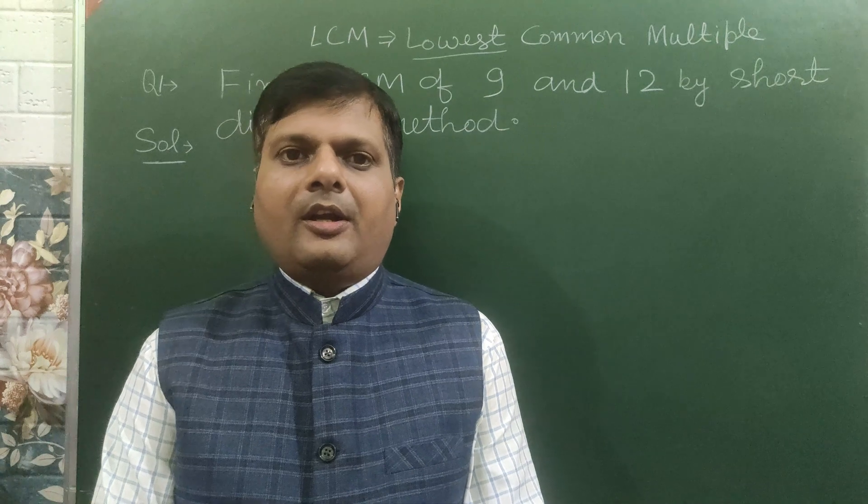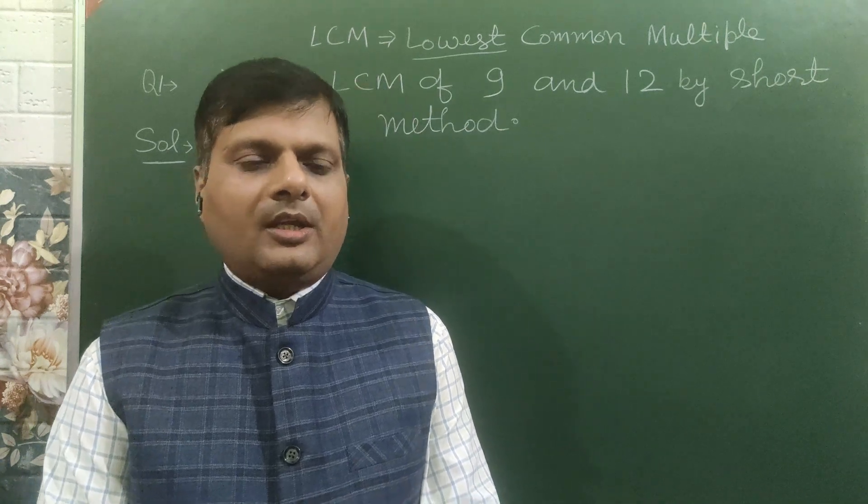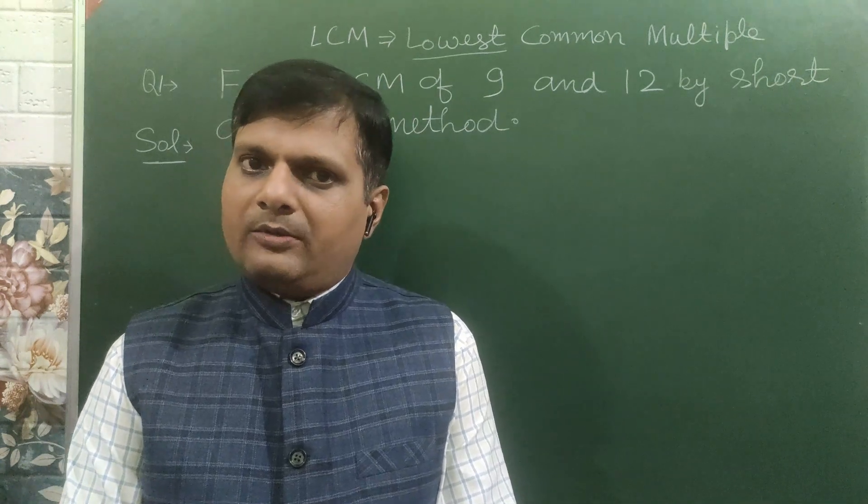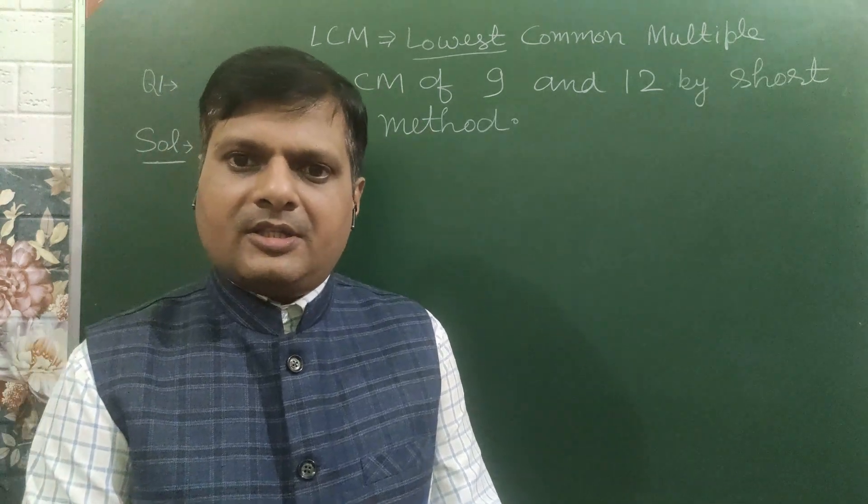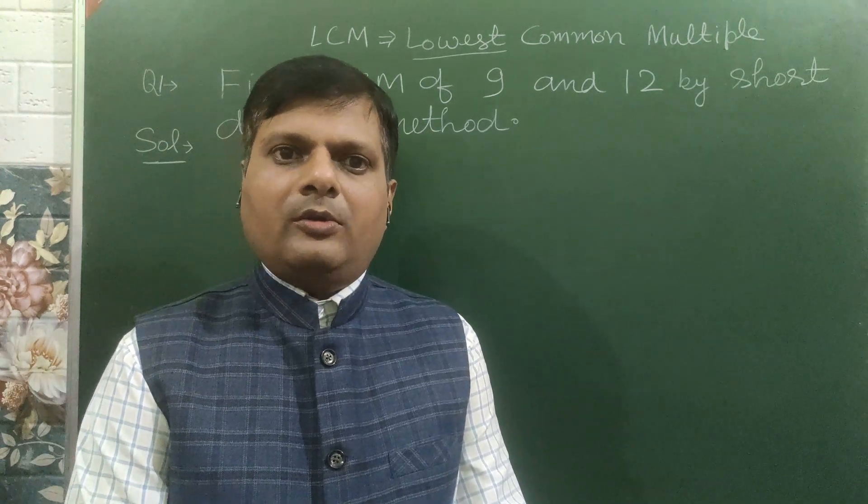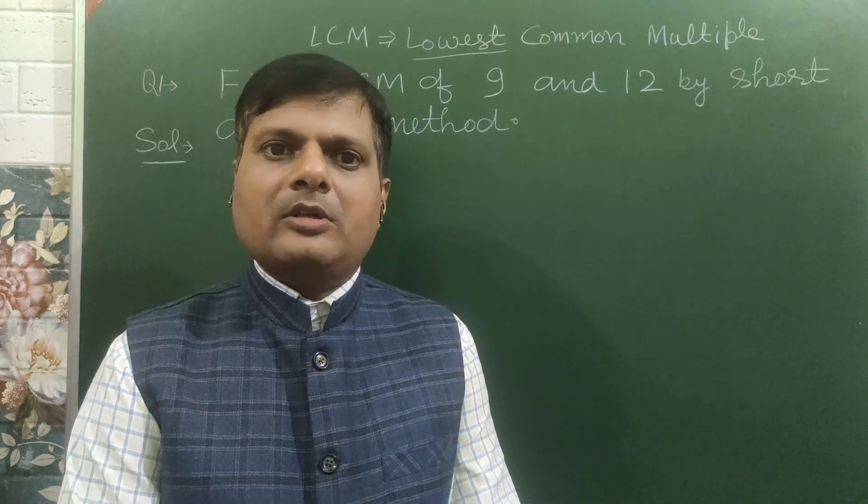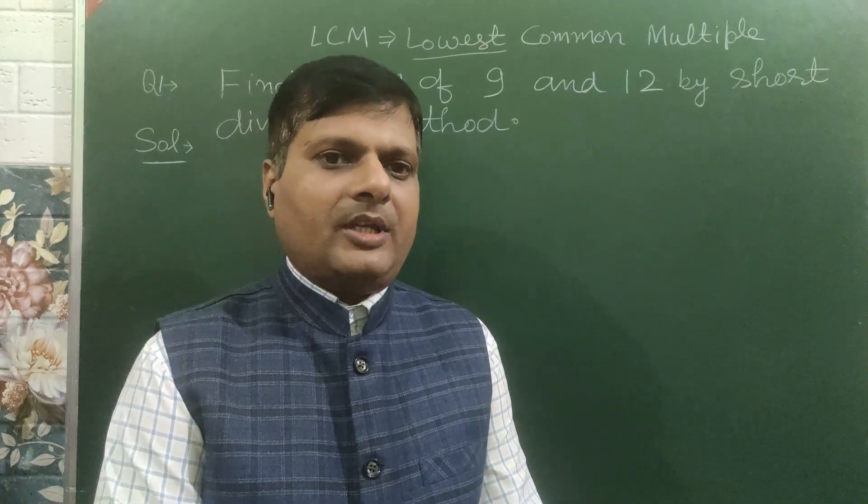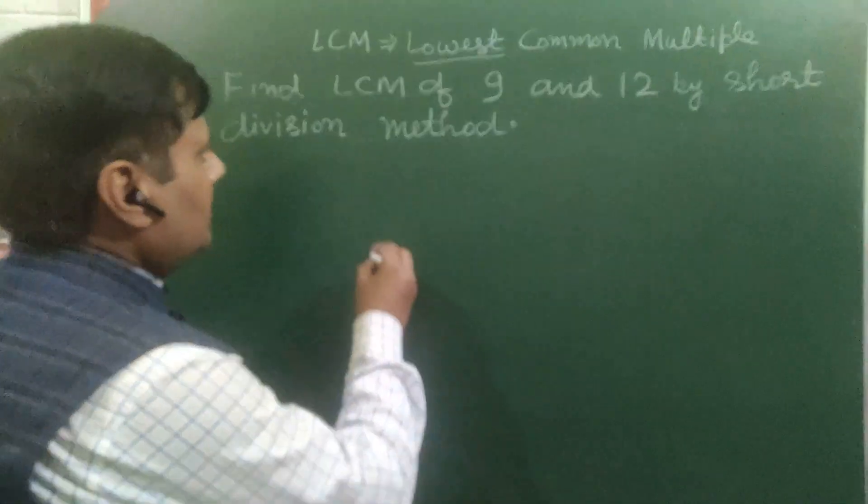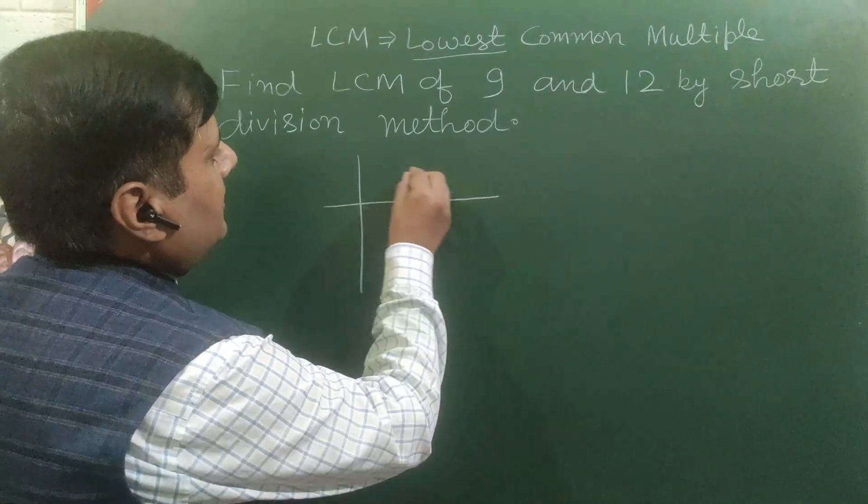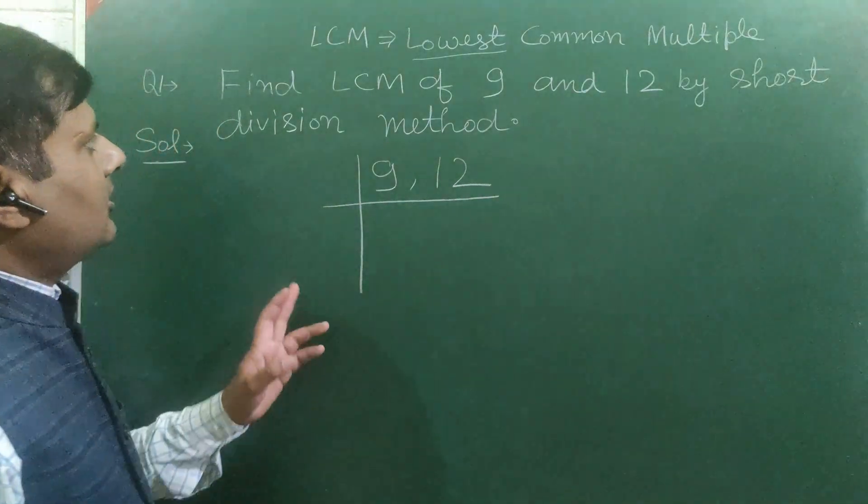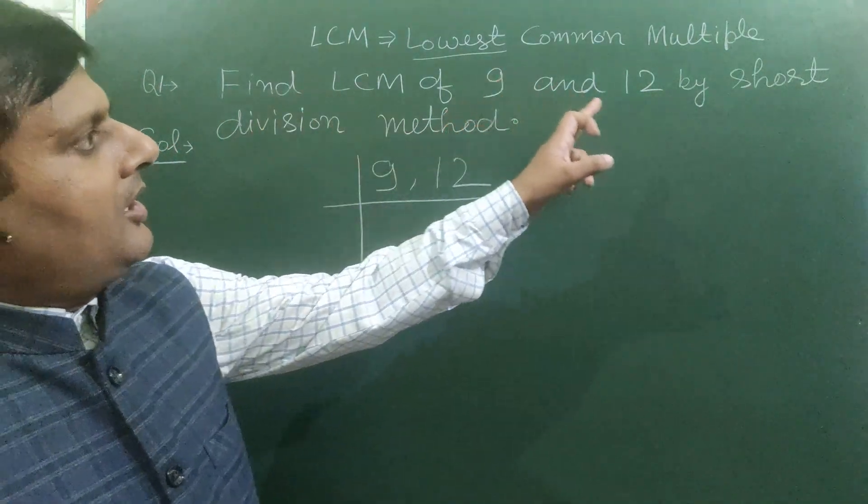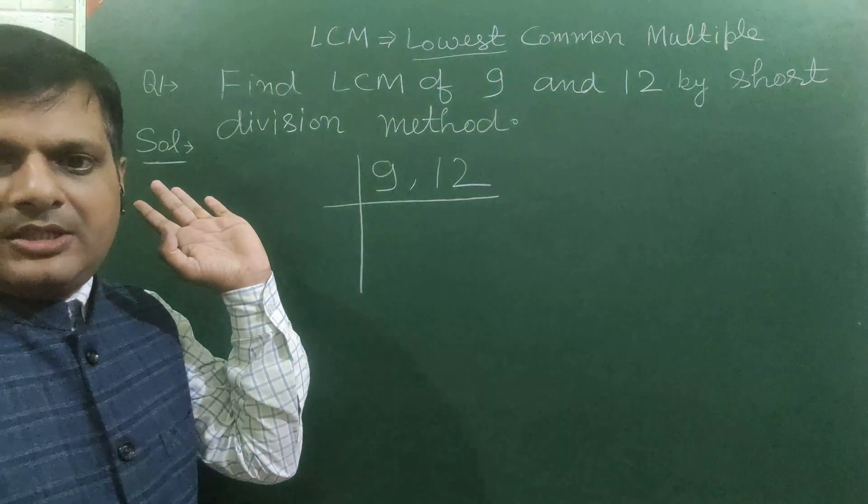First time we found LCM of 9 and 12 by writing multiples of 9 and 12. Second method was by writing prime factors. Here we will solve LCM of 9 and 12 by short division method, that is very common. You write 9 and 12. Just read the question: find LCM of 9 and 12 by short division method.